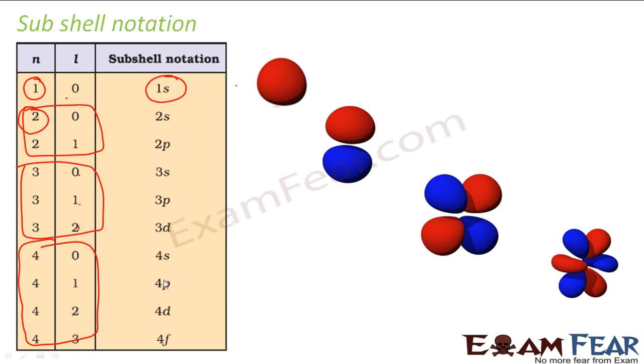For n is equal to 4, I can have L to be 0, 1, 2, 3. So I have 4s, 4p, 4d. This is my s, this is my p, this is my d and this is my f. Correct, this is the subshell notation. 0 means s, 1 means p, 2 means d, 3 means f.